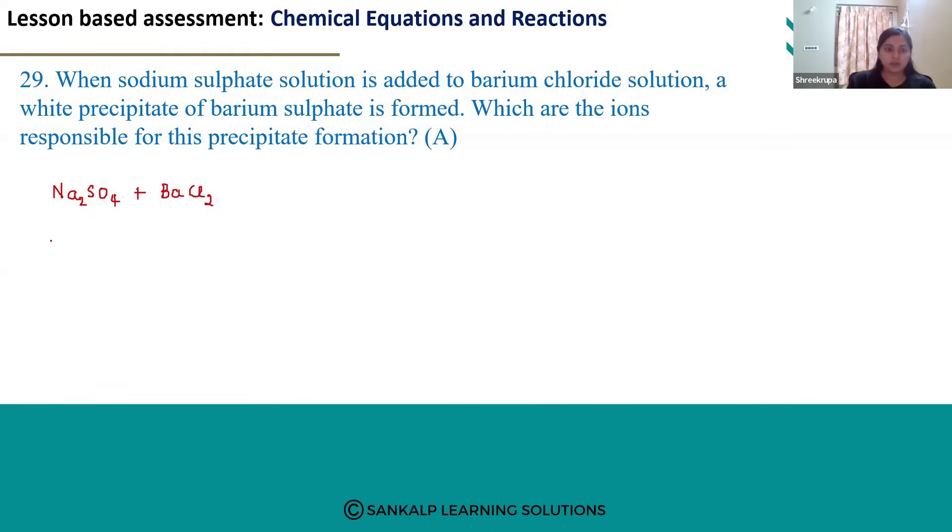Here we can see the formation of ions: two Na⁺ ions and SO₄²⁻ from sodium sulphate. This reacts with Ba²⁺ and 2 Cl⁻ ions from barium chloride. These are the ions we get from these two compounds.